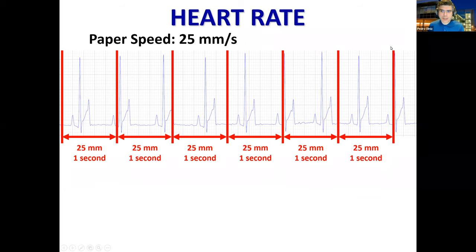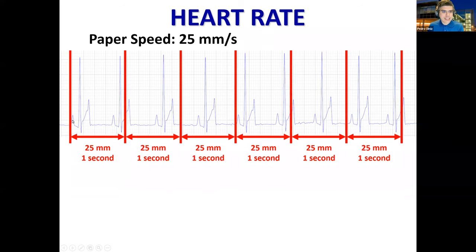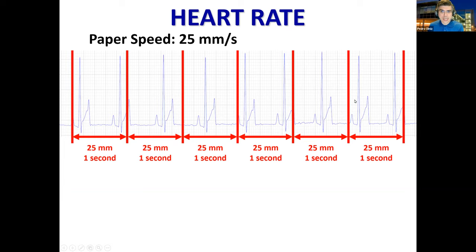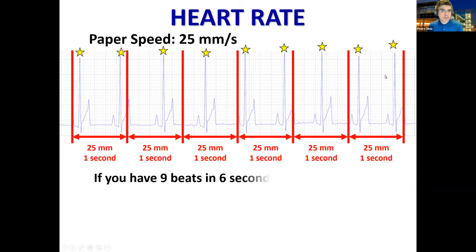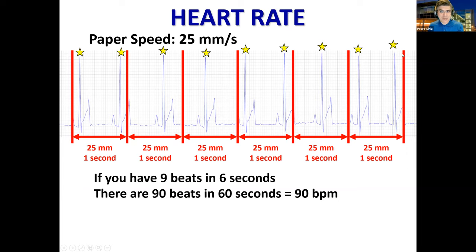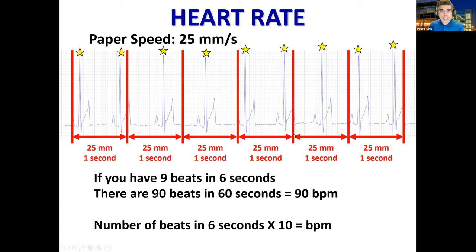Remember that we barely missed the last QRS complex. Depending on where you start and where you end, you might get a different heart rate. If I shift the start by one box but keep everything consistent, I still have 6 seconds but now capture the last beat — giving 90 beats per minute instead of 80. So which is correct? Both are correct; the heart rate varies and ranges from 80 to 90. You still just count beats in 6 seconds and multiply by 10.